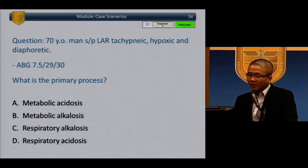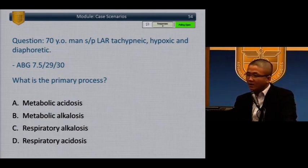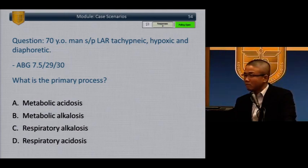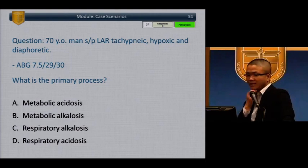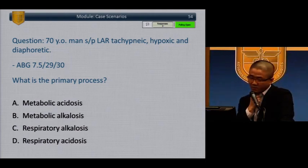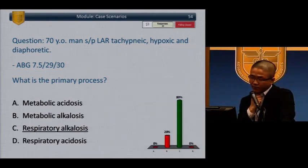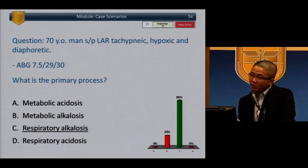A 70-year-old man status post low anterior resection is becoming tachypneic, hypoxic, and diaphoretic. Looking at the ABG — what is the primary process? The answer is respiratory alkalosis. If a patient is hyperventilating and hypoxic post-operatively, that equals pulmonary embolism.